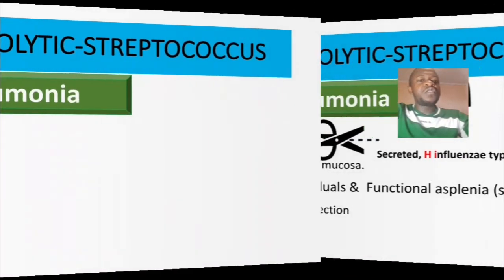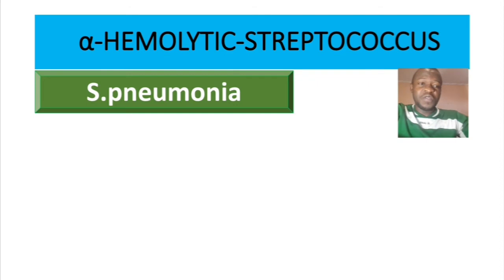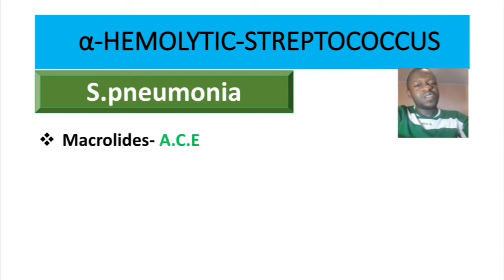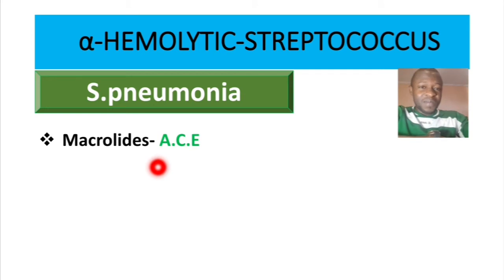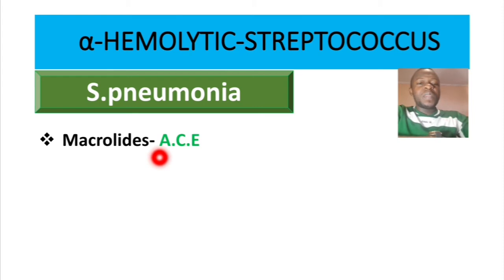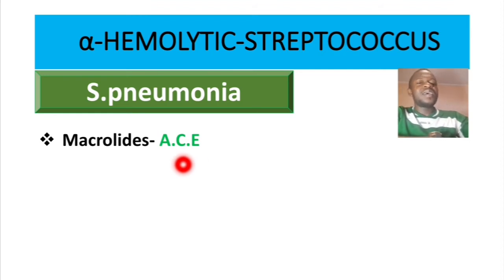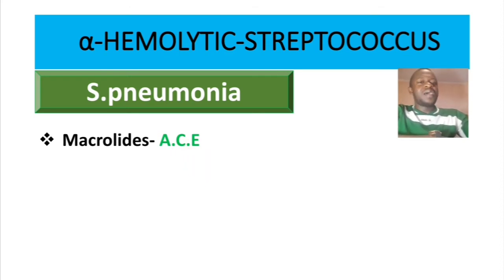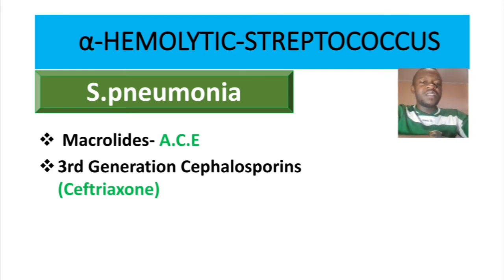For treatment of infections caused by Strep pneumo, number one we have macrolides, represented by the mnemonic ACE: azithromycin, clarithromycin, and erythromycin. We can also use third-generation cephalosporins like ceftriaxone.